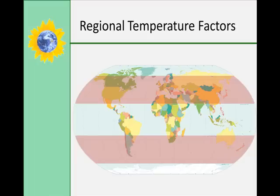Altitude is the height above sea level. Within the troposphere, the temperature decreases 3.5 degrees Fahrenheit with every thousand foot climb in altitude on average.